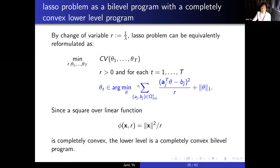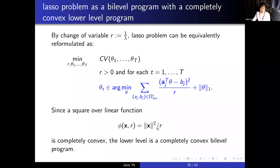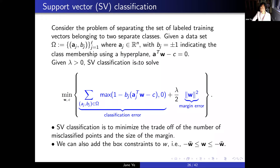Looking at the Lasso problem, with lambda at the upper level and theta at the lower level, lambda times the L1 norm of theta is not completely convex. But we can divide the lower-level objective by lambda and change variables, making the function completely convex in x and r. So the Lasso problem can be reformulated as a completely convex bi-level program, and the cross-validation function is convex, so we can apply the DC algorithm.